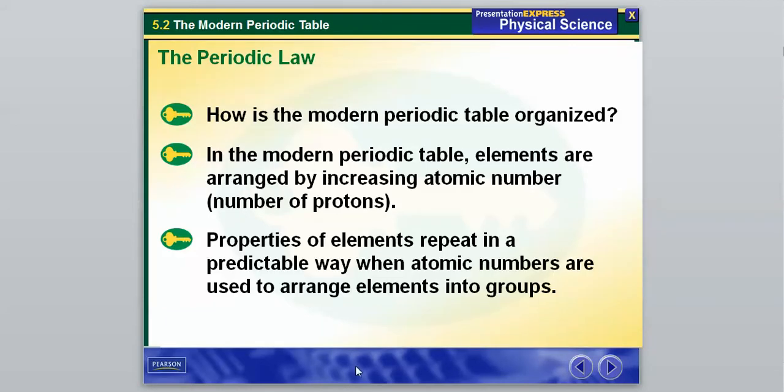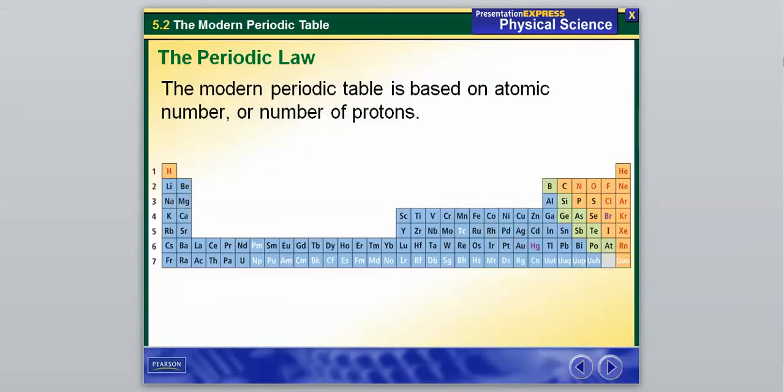And then the properties of the elements repeat in a predictable way when the atomic numbers are used to arrange elements into groups. So when we use the atomic number, or the number of protons, to arrange these elements, definite patterns are going to start to form by the repeating of different properties.